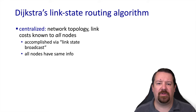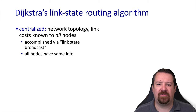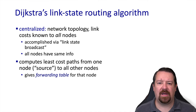The link state algorithm requires global information, meaning that every single router needs information about every other router's interfaces and whether they're up or down and what they're connected to. This information is distributed via link state advertisements, so every router will receive information from every other router in the network. Once this advertisement happens, all of the routers have the same information about the state of the network. Using that information, each router can compute the least cost paths from itself to every other router in the network.